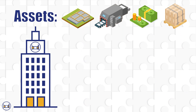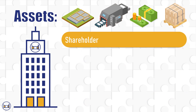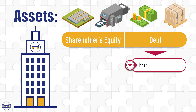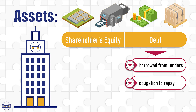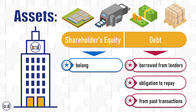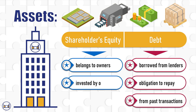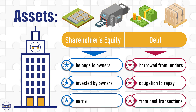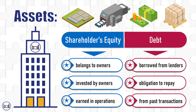These assets are financed by a combination of money contributed by the owners of the company and debt. That is, everything the company owns is financed through a mix of debt and shareholders' equity. Debt is what the company has borrowed from third-party lenders, like banks or suppliers — an obligation to repay someone, which arises from a past transaction. Shareholders' equity is what belongs to the company's owners: money that the owners themselves invested or earned through the company's operations.